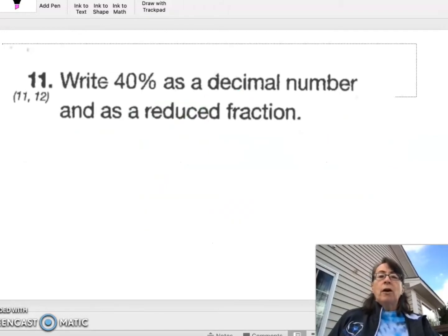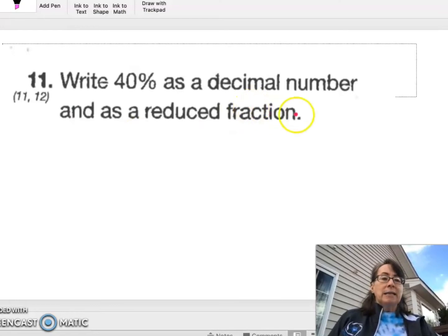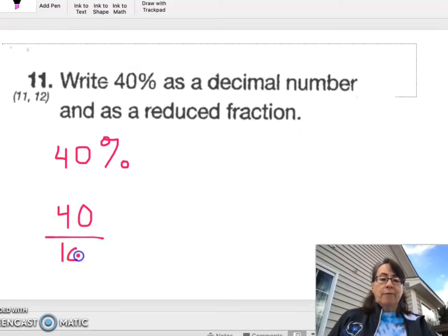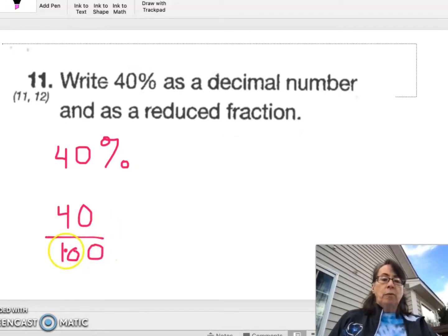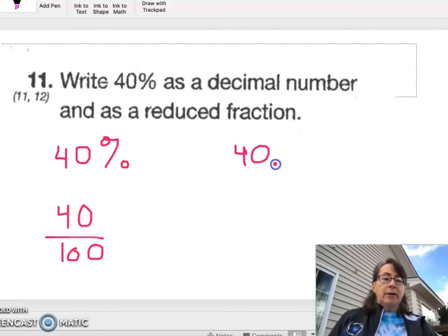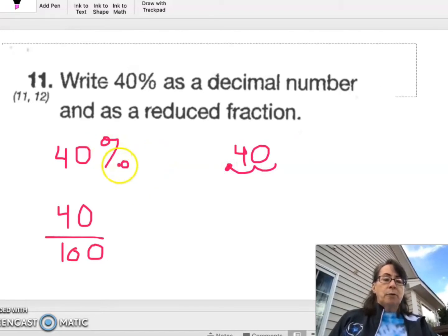Number 11. Write 40 percent as a decimal number and a reduced fraction. So 40 percent. To write 40 percent as a decimal, we're going to remember that this is out of 100. When we divide by 100, we just move the decimal two places over.